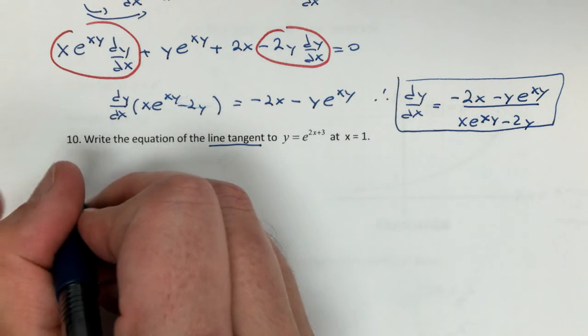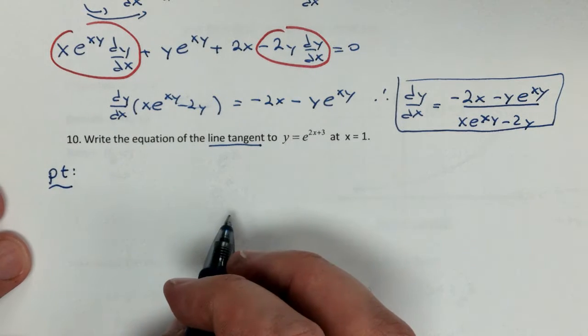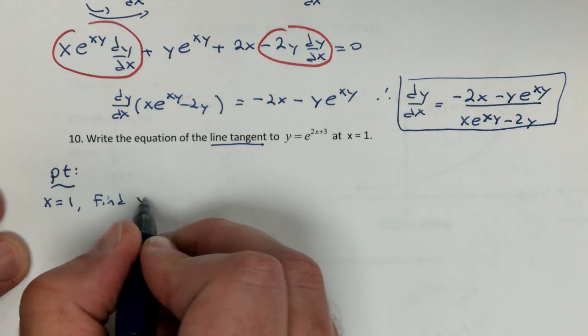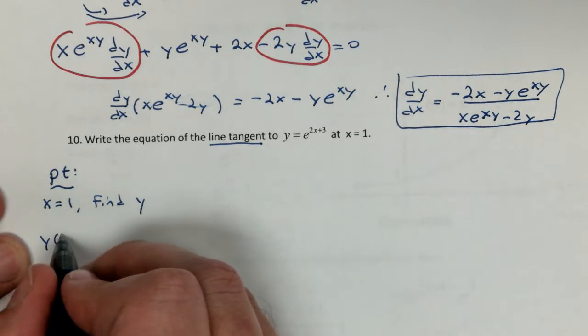When we write a tangent line, don't forget the first thing we need, we need to get a point. Now, we have the x value at 1. We have to find y. So I'm going to do that just by plugging it into my function.